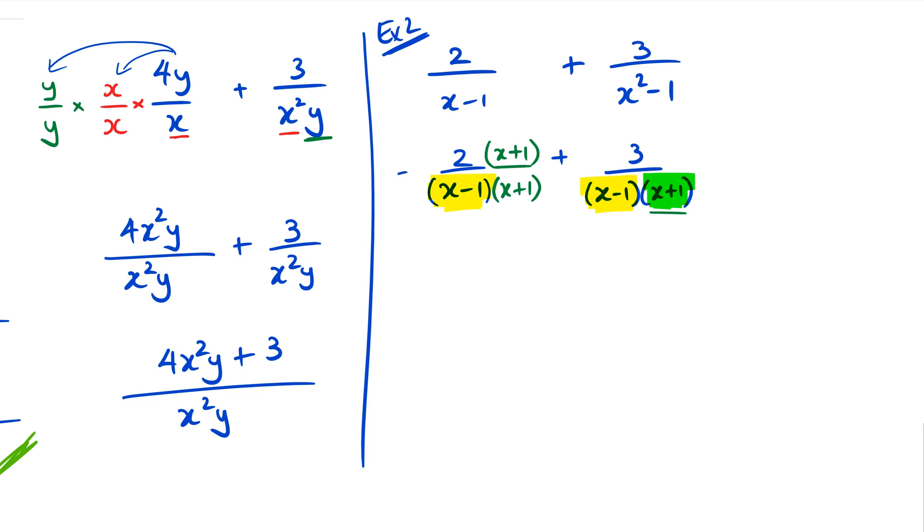What then happens is you've got 2 times x which is 2x, 2 times 1 which is 2, and we've got plus 3 at the end. The denominators are the same right now so I can put them all as one denominator, x minus 1 and x plus 1.